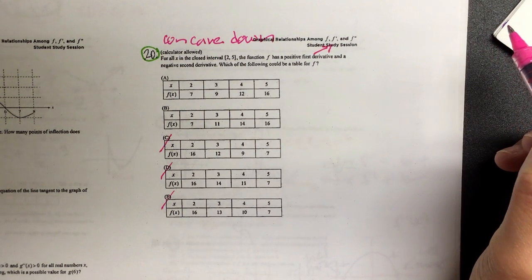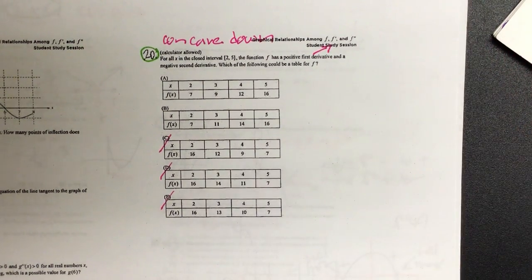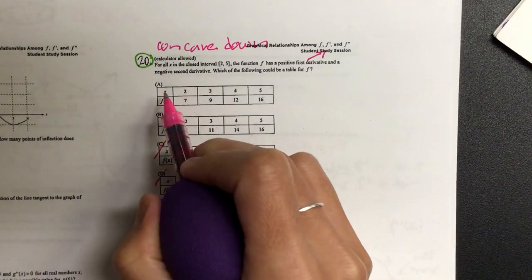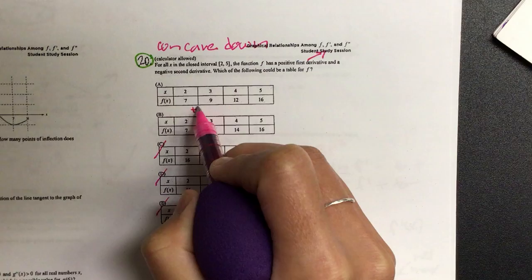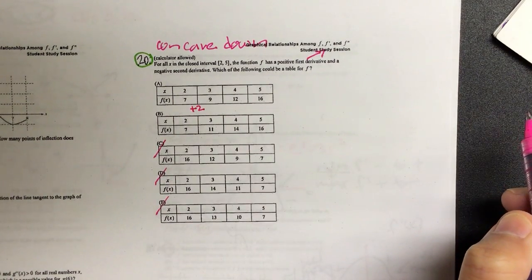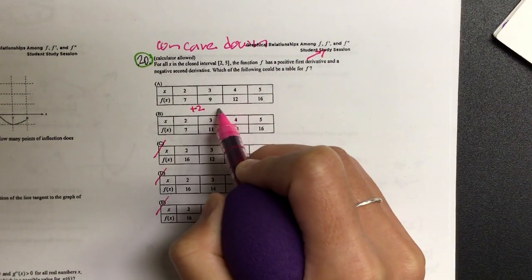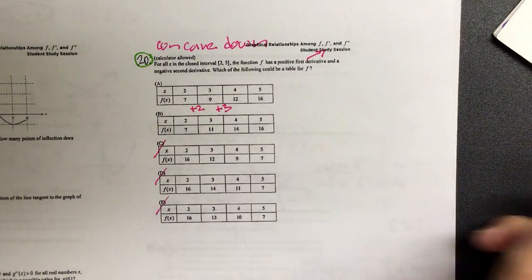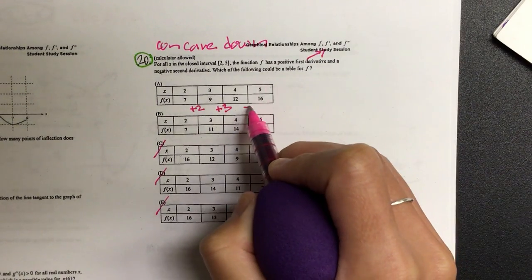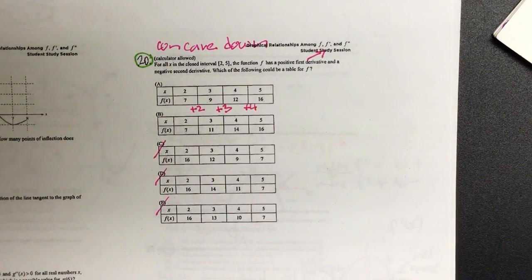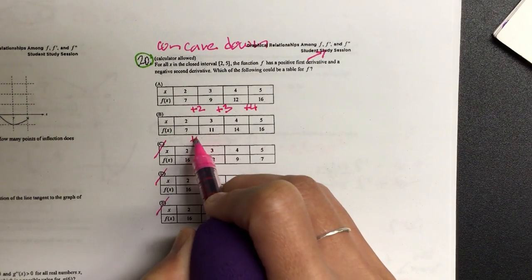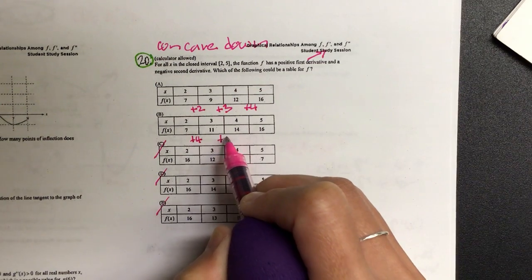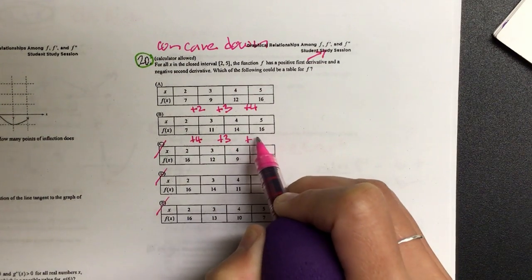On my second derivative, it's concave down. Let's see what that basically means. On A, I want to look at the rate. 7 to 9, we're adding 2. How many are we adding on 9 to 12? Adding 3. And 12 to 16, we're adding 4. And then let's look at part B. How many are we adding, difference between the first and the second one? 4. And then the next one? 3. And then after that? 2.